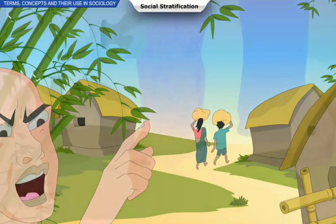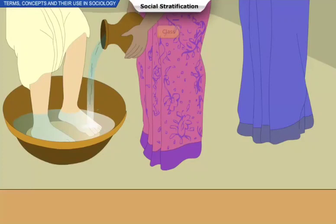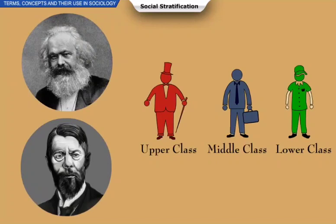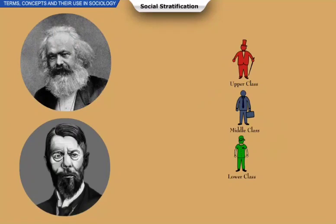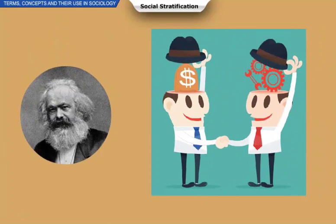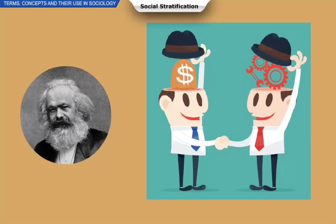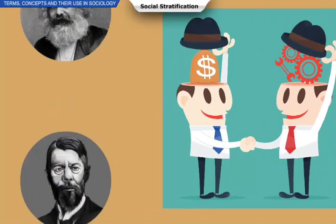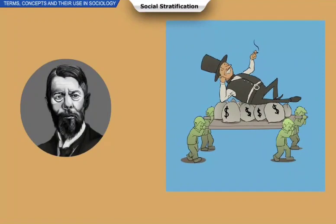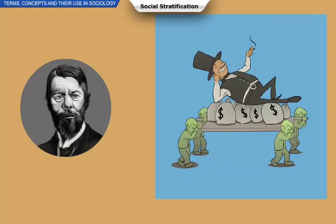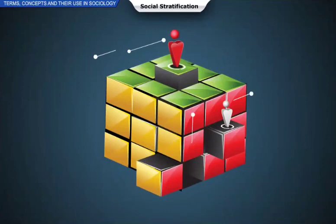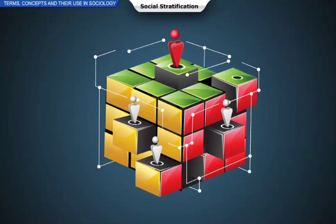Marx, Weber, and the functionalist theorists have all focused on the study of class as an important system of social stratification. Marx propounded the theory that social classes are recognized by their relation to the means of production in capitalist society. Weber was more concerned about inequalities produced by classes, which were not only based on economic relations but also rested on social status and power. The functionalist theory proposes the necessity of social stratification in societies to motivate individuals to fight for their social positions.